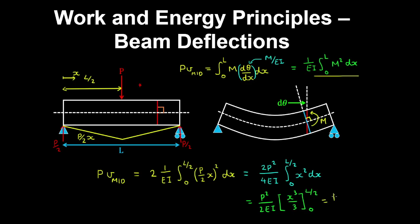Therefore we have P squared on 2EI multiplied by L on 2 cubed on 3, which gives L cubed on 24. And therefore this simplifies to P squared times L cubed on 48EI.